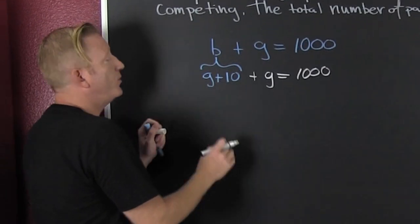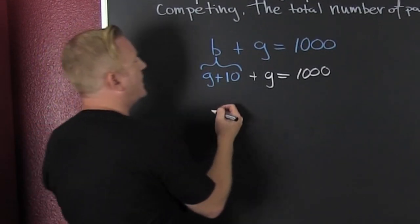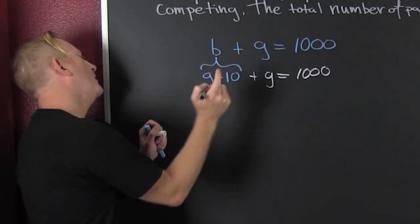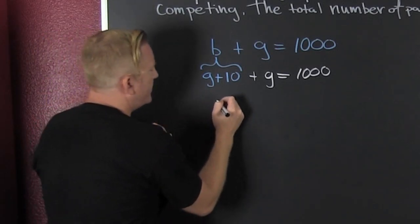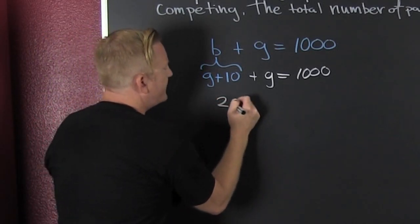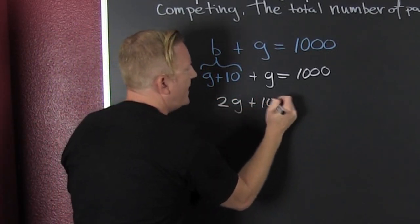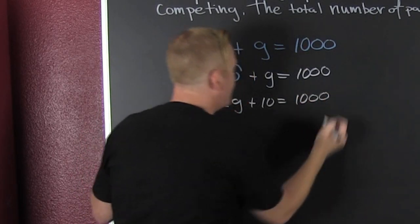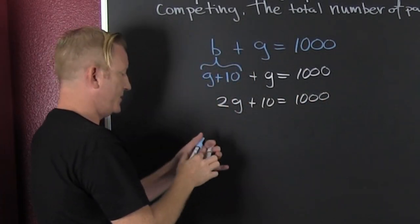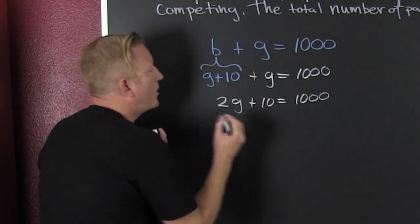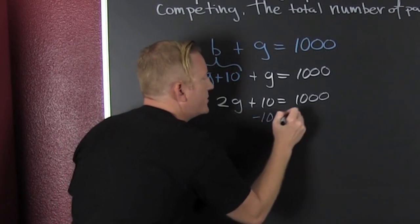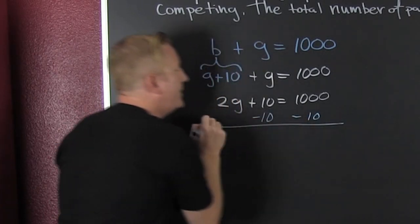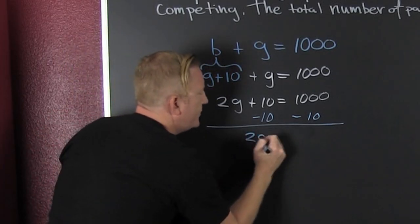Now that we have it all in one variable, we gather like terms. Like terms are terms with exactly the same variables raised to exactly the same powers. So we have 2g plus ten equals one thousand. Now it's all linear, so we're almost already out.